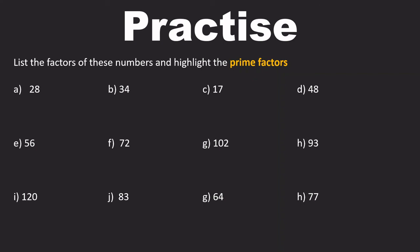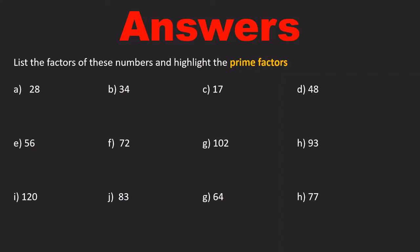I hope you had a chance to hit pause, because here come the answers. For question A, 28 has got factors 1, 2, 4, 7, 14, and 28 — and 2 and 7 are the primes. For B, 34 has got factors 1, 2, 17, and 34 — and 2 and 17 are prime numbers. Question C should be easy then — as we just said, 17 is a prime number, so its only factors are 1 and 17. I hope you didn't highlight 1 as being prime. Question D, 48 has got factors 1, 2, 3, 4, 6, 8, 12, 16, 24, and 48 — but the only prime numbers there are 2 and 3. If you notice, all of the other factors are some multiple of 2 or some multiple of 3.